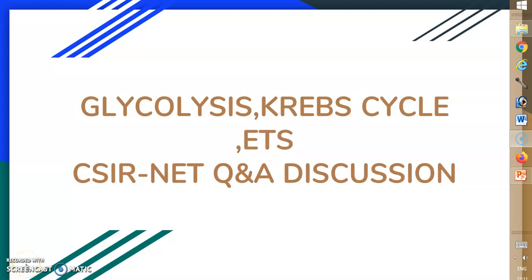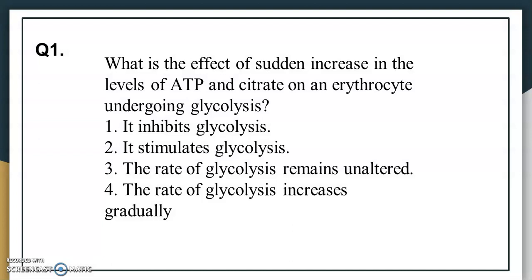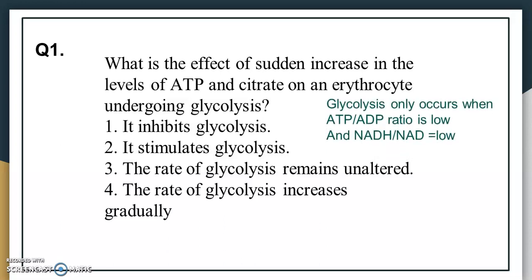Let's talk about a few questions of CSI NET syllabus in the topic of glycolysis, Krebs cycle, and electron transport chain. First question: what is the effect of a sudden increase in the level of ATP and citrate on an erythrocyte undergoing glycolysis? We know that glycolysis occurs due to the low concentration of ATP.